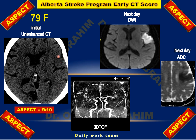MR TOF 3D imaging showed attenuation of the left middle cerebral artery periphery, confirming the diagnosis. With an ASPECTS score of 9 out of 10, thrombolysis is appropriate and should show a good outcome.